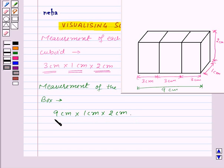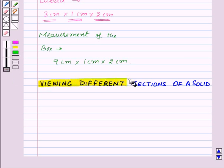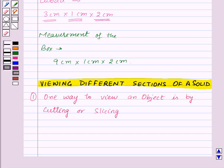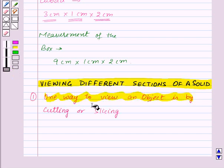Thus here we were able to find the measurements of the box only by visualizing this given solid object. Now our next topic is viewing different sections of a solid.